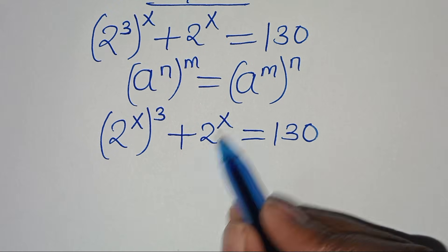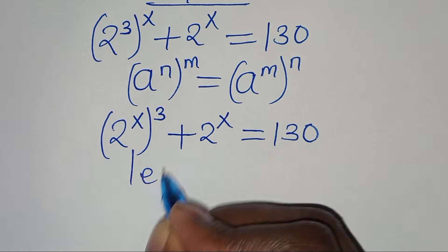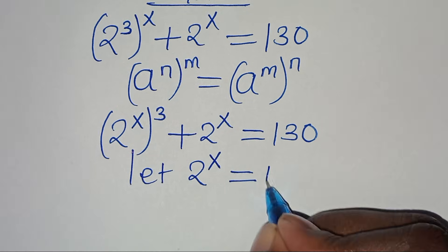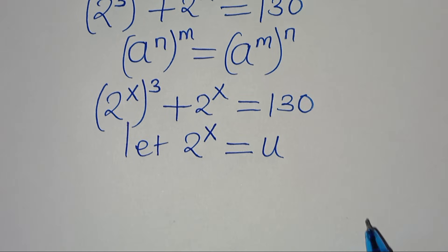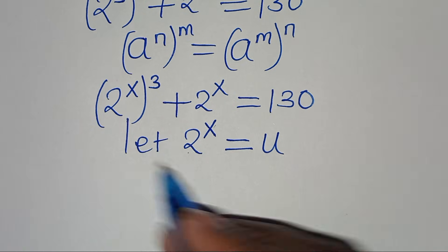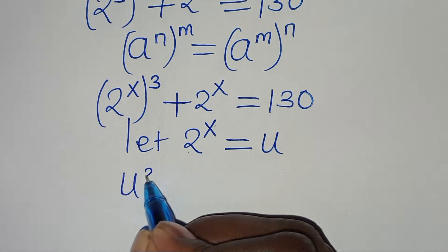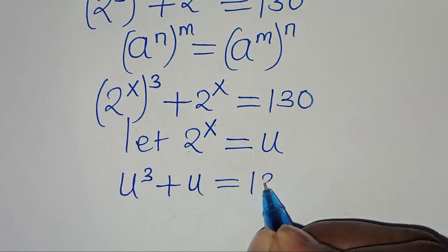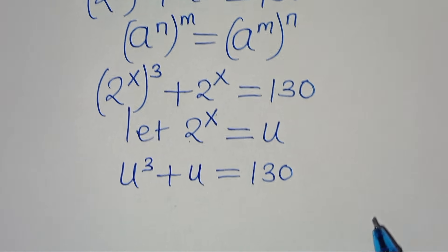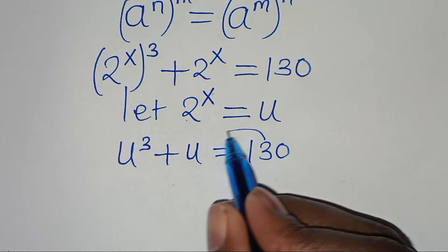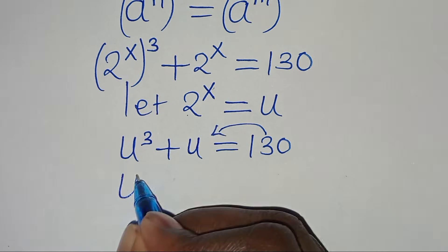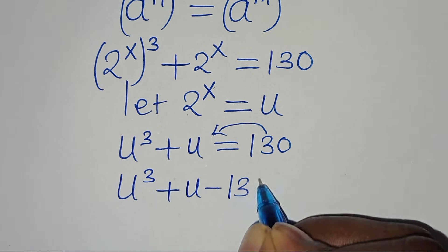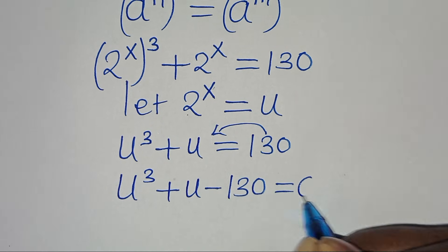Now, 2 to the power of x is common here, so we can let 2 to the power of x be equal to u. Let's substitute u where we have 2 to the power of x, so that we have u to the power of 3 plus u, equal to 130. The next step is to take 130 to the left-hand side, so that we have u to the power of 3 plus u minus 130, equal to 0.